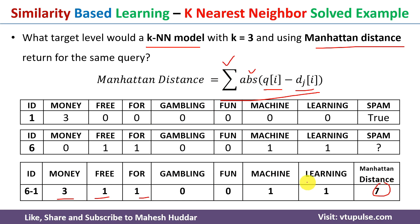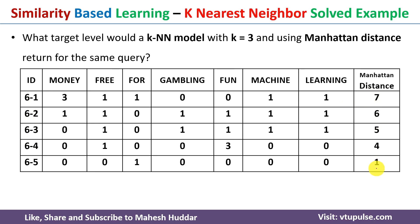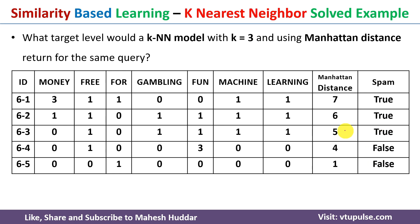Similarly we calculate the distance from example 6 to examples 2, 3, 4, and 5. I have calculated all those values — these are the Manhattan distances for all examples. With k equal to 3, we find the three nearest neighbors. Out of these three nearest neighbors, two of them are False and one is True, so the new example will be classified as False since False is the majority.